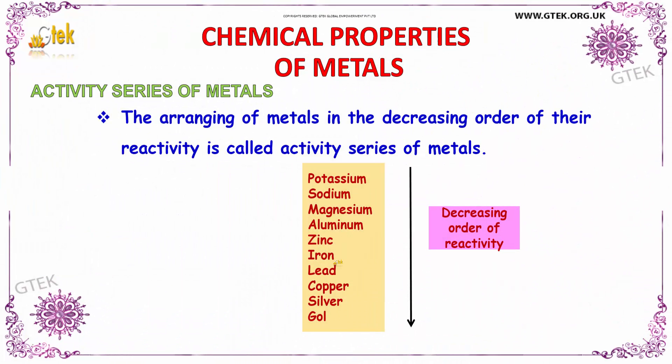Now let us discuss about the activity series of a metal. The arranging of metals in the decreasing order of their reactivity is called the activity series of a metal. You can see the flow which goes in a downward direction.